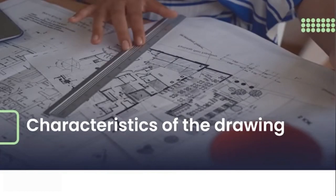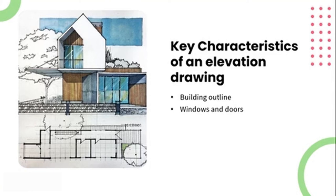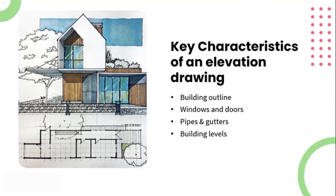Given that we have gathered all our information for Fred's room in our schematic design phase, let's dig deeper and look at what information you can expect to find in elevation and section drawings. Let's look at some key characteristics evident in a section and elevation drawing — take note as you will be using this throughout our lesson. A simple elevation drawing might show the outline of the building, openings of windows and doors, pipes and gutters, building levels, dimensions and heights, and exterior detailing.